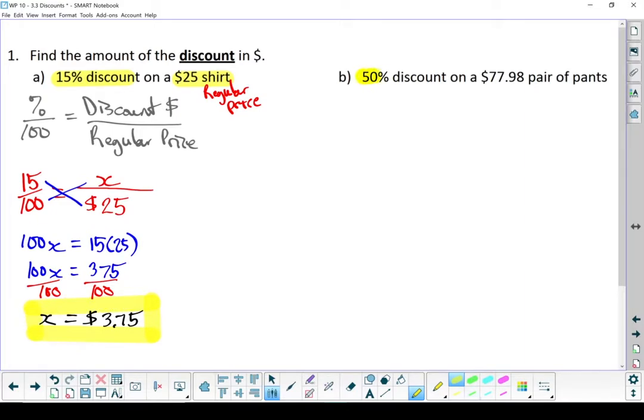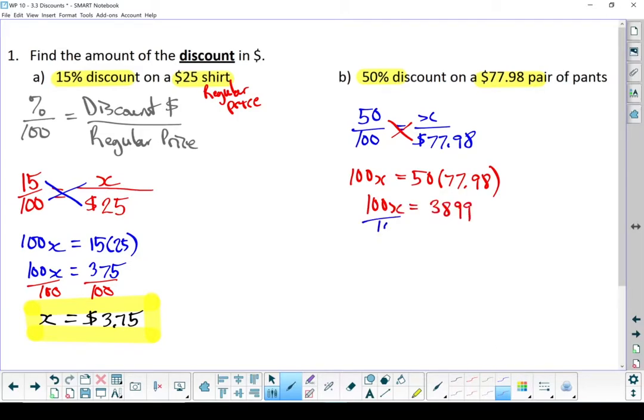Let's do one more. Our percent is 50%, that's what our discount is, and $77.98 is our regular price. Let's put them into the formula. All right, let's cross-multiply that. In this case, our discount is $38.99. That's how much money we're going to save.